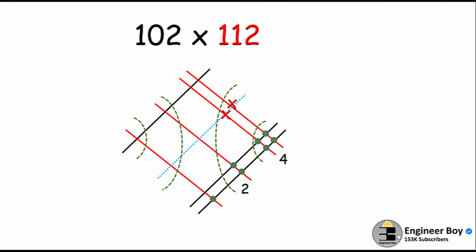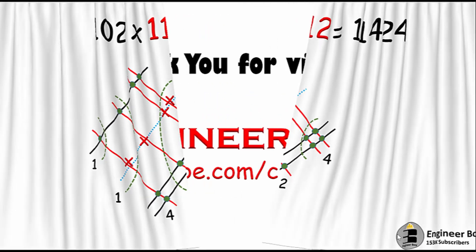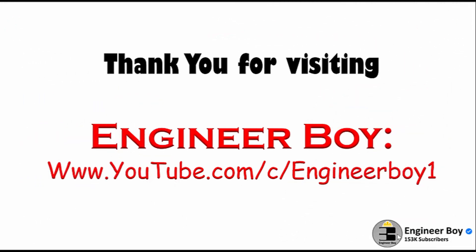Next, count the middle one — that also cannot be counted because it's made with the dotted line. At the top we have two, making four. Again, one intersection cannot be counted. At the left-hand side we have one. So the answer is 1142. That's it — thank you for watching! I hope you understand and your kids will understand it better.